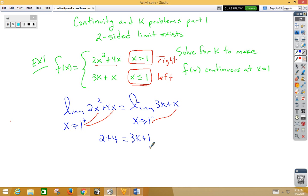So now we have 6 is equal to 3k plus 1. 3k is 5, so k would be 5 thirds.